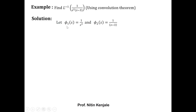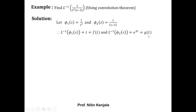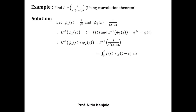Now we find the corresponding inverse Laplace transforms. The inverse Laplace transform of φ1(s) is t, which we call f(t), and the inverse Laplace transform of φ2(s) is e^(3t), which we call g(t). From f(t) we calculate f(s) by replacing every t with s, so f(s) = s. From g(t) we calculate g(t−s) by replacing every t with (t−s), giving g(t−s) = e^(3(t−s)).